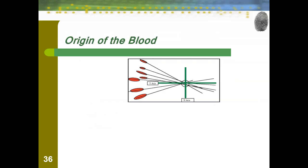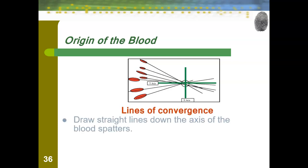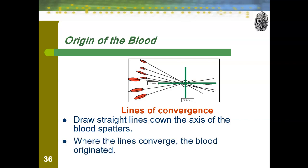Something else we can determine from a spatter pattern is the origin of the blood, and we do that through what are called lines of convergence. You essentially take each individual blood droplet and draw straight lines down the axis of the blood spatter in the direction they came from. Where all the lines converge is where the blood originated — meaning that is likely where the person was standing when they started to bleed. You will not get everything to one perfect point because people take up an area and may be bleeding from multiple locations or may have moved slightly.